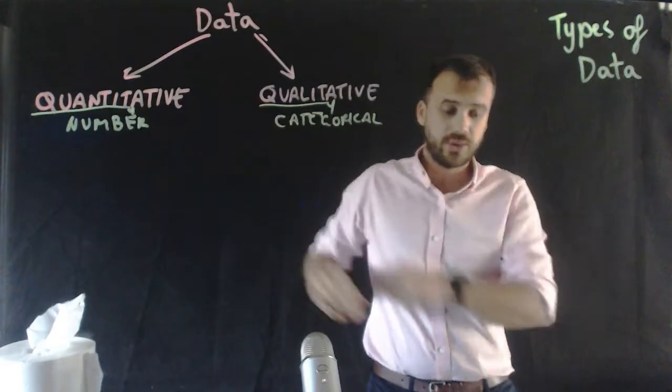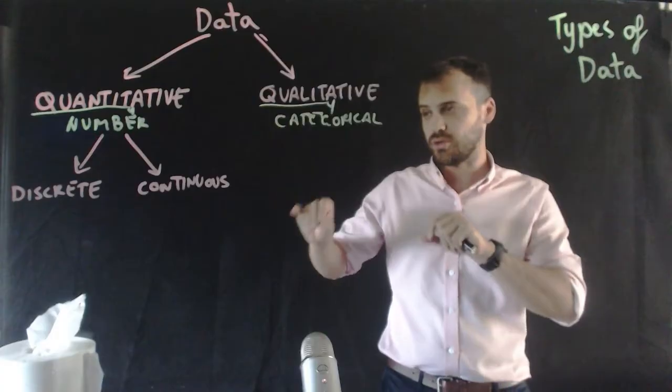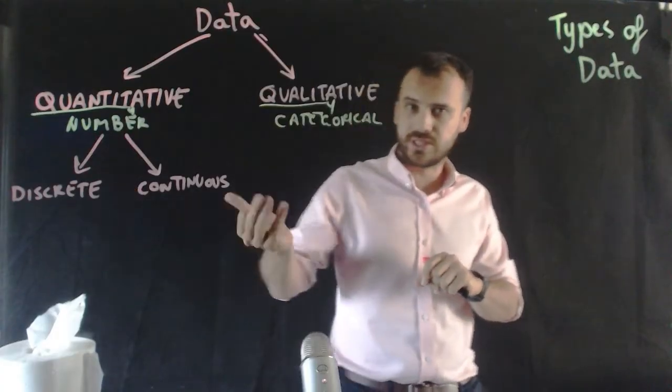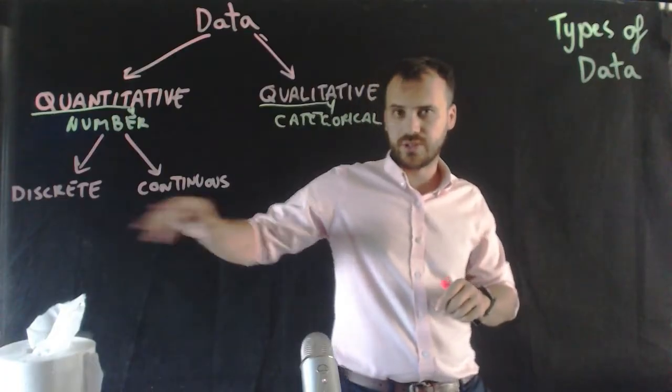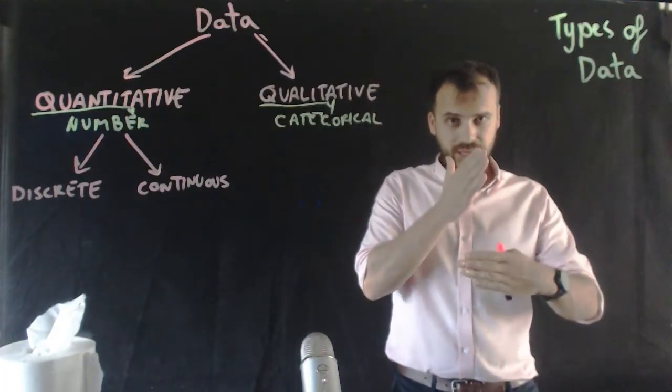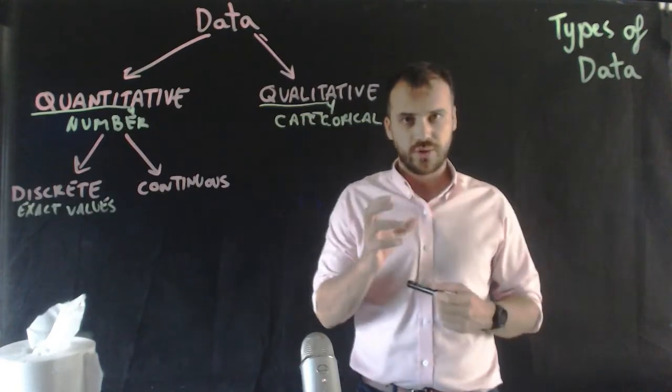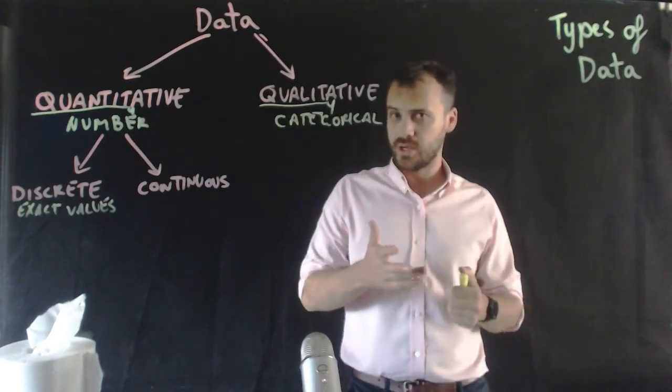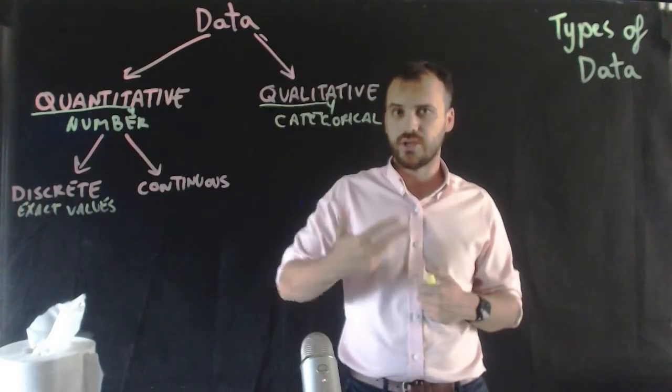So I'm going to split up our quantitative data. So inside of our quantitative data, we can split that into two groups, discrete or continuous data. So let's talk about discrete data first. Discrete is exact values. So for instance, the grade you are in in school, you're in grade 1 or 2 or 3 or 4.